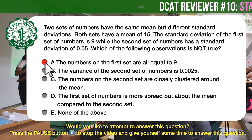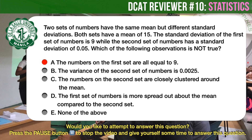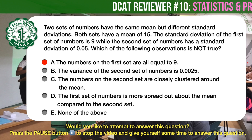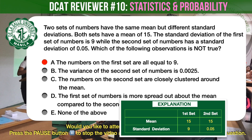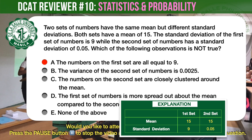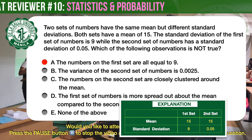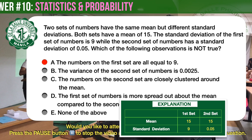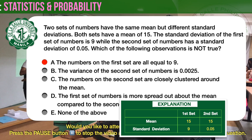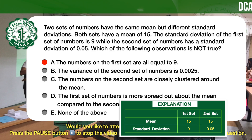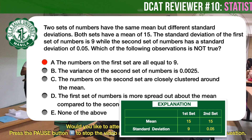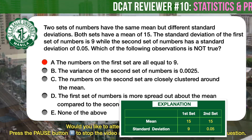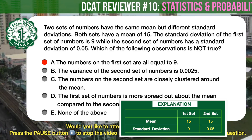The correct answer is A — that the numbers on the first set are all equal to 9 is not true. Let's tabulate the given values for the two sets. Standard deviation is a measure of how close the results are to the mean. Larger standard deviation means the values are more spread about the mean. Smaller standard deviation means the values are closer to the mean, making the data more consistent. Let's examine and evaluate each answer choice based on our tabulation.